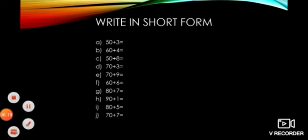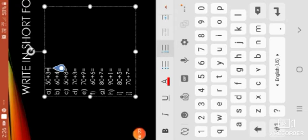So dear children, this is your exercise on page number 48 of the book. I am going to do a few examples. Rest you will do yourself. What we have to do is write in short form. So our first question is 50 plus 3. What does it mean? 50 plus 3 means 5 tens plus 3 ones. 50 in your mind and 3 on your fingers: 51, 52, 53. Your answer will be 53.